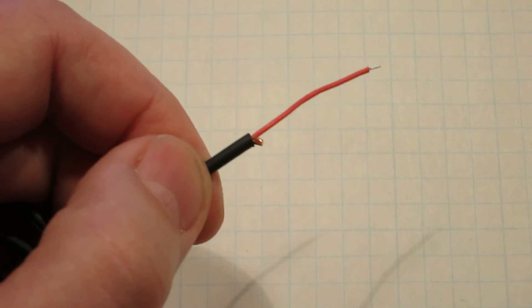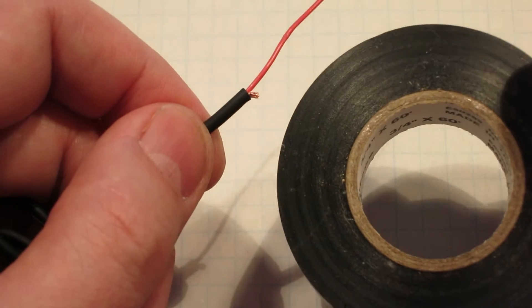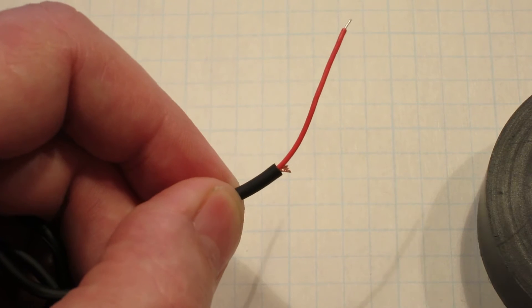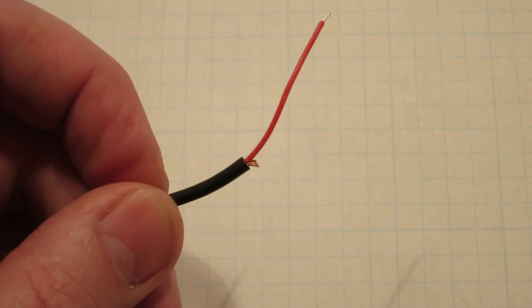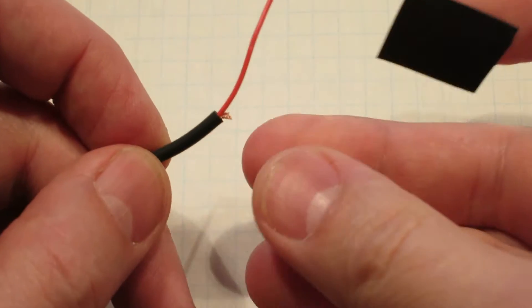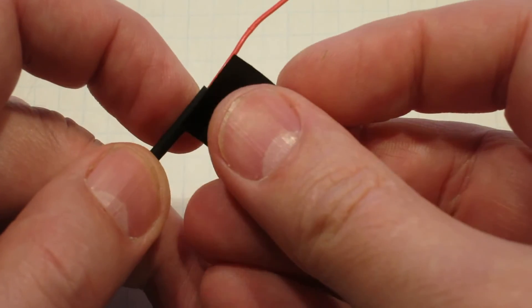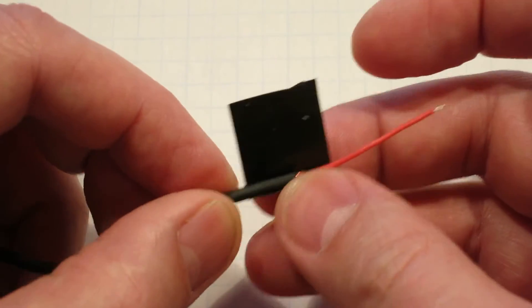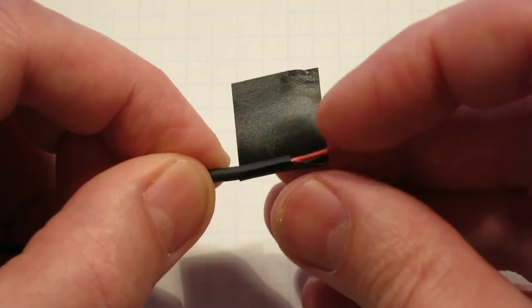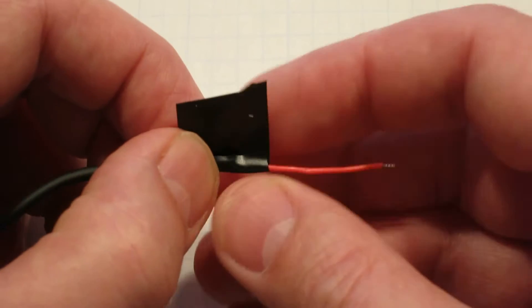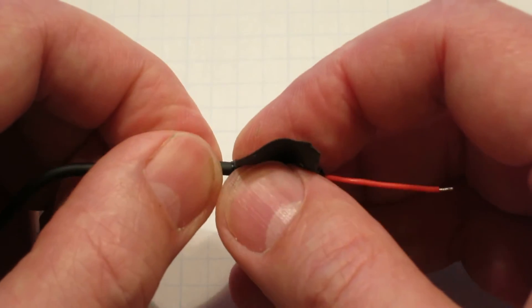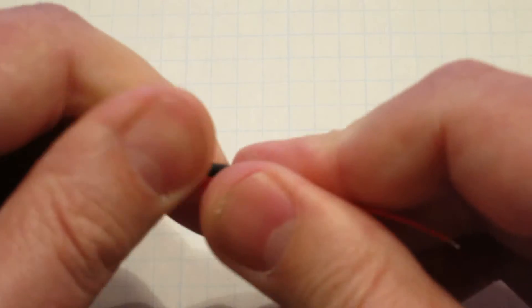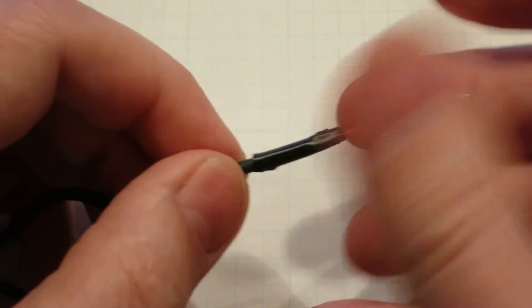Then you're going to take black electrical tape and wrap it around here so that shield can't touch anything. Just take a short piece of electrical tape and roll it around and do the same thing with the white wire.